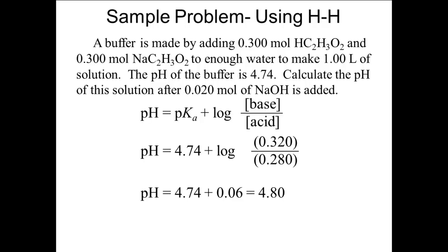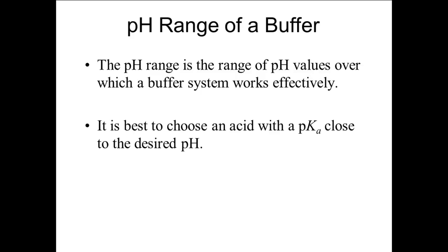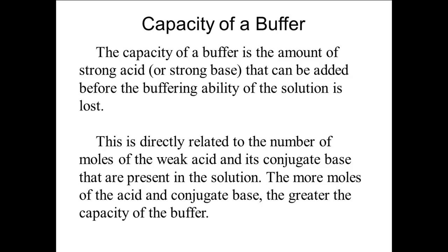This brings us to the final two points about buffers. The pH range of a buffer is the range of pH values over which a buffer system works effectively, usually one to two pH units on either side of the pKa, corresponding to an acid-to-conjugate-base ratio of about 100 to 1, to about 1 to 100. If you want to make a buffer of a particular pH, choose a weak acid whose pKa is close to the target pH. The buffer capacity is the amount of strong acid or strong base that can be added before the buffer loses its ability to buffer, which is directly related to the number of moles of acid and conjugate base present — the more moles present, the greater the buffer capacity.